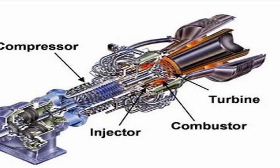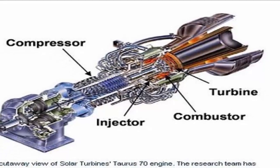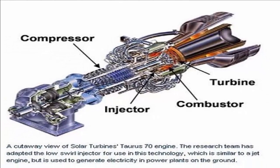Land-based gas turbines are of two types: heavy frame engines and aeroderivative engines. Heavy frame engines are characterized by lower pressure ratios, typically below 20, and tend to be physically large. Pressure ratio is the ratio of the compressor discharge pressure to the inlet air pressure.